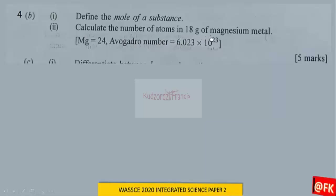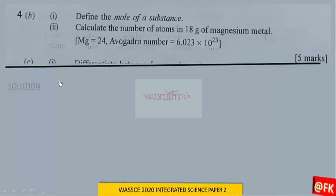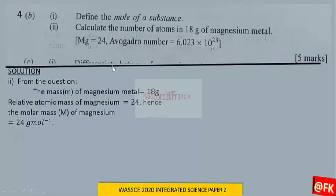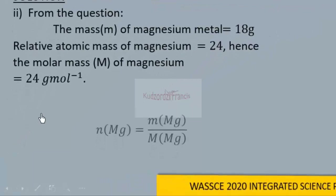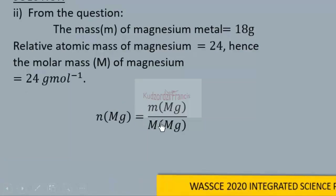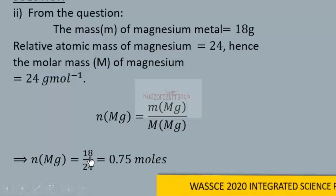From the equation, the mass of the metal is 18 grams and the relative atomic mass is 24, so the molar mass of magnesium is 24 grams per mole. To find the number of moles, we use: moles = mass / molar mass. By substitution, moles = 18 / 24.